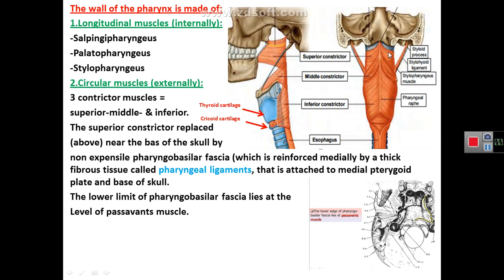The superior constrictor shows a space above it between its upper border and the base of the skull, filled by the pharyngeal basilar fascia. This is reinforced medially by the pharyngeal ligament, a midline structure called the pharyngeal raphe, which gives insertion to the constrictor muscles. The lower level of the pharyngeal basilar fascia is the level of Passavant's muscle, and superiorly it is attached to the posterior border of the medial pterygoid plate and the base of the skull.